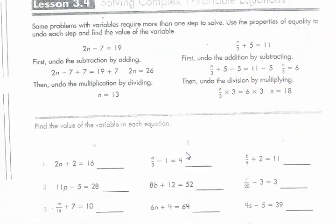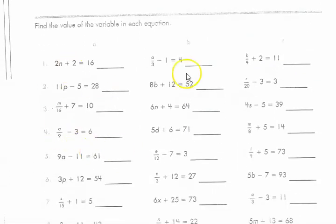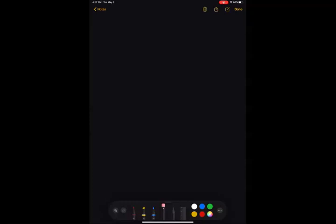I'm going to work through a few of these problems here for you. So let's do number 1a from your page 5 in your Spectrum Math Packet. 1a says 2n plus 2 equals 16. So let's take this step by step.